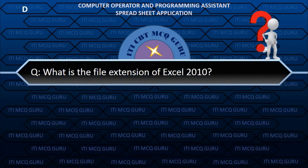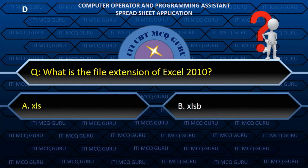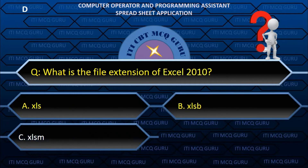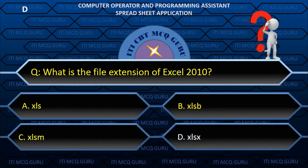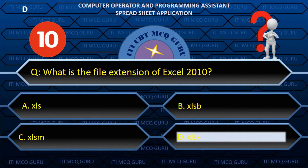What is the file extension of Excel 2010? B. .xlsx.